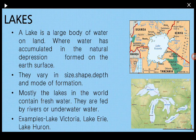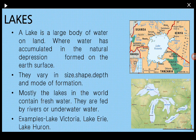Another water body is lakes. A lake is also a large body of water present on the Earth's surface. Lakes are formed by the accumulation of water from rivers, from rain, or even underground water, which collects in a natural depression on the Earth's surface. Lakes can be of different sizes, shapes, and depths. Mostly lakes contain fresh water, meaning water which does not contain salt unlike oceans and seas. Examples include Lake Victoria, Lake Erie, and Lake Huron.